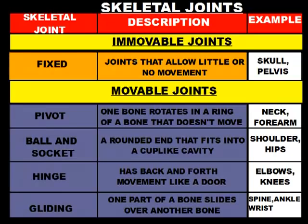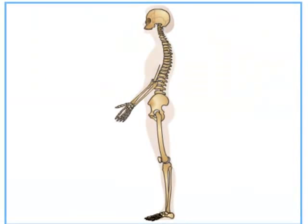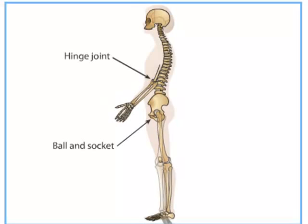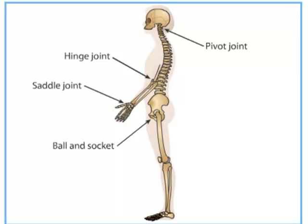Let's watch an animation to recap the different types of joints we talked about tonight. Most of the joints in the body are movable joints. Movable joints include hinge, ball and socket, pivot, saddle, and gliding joints.